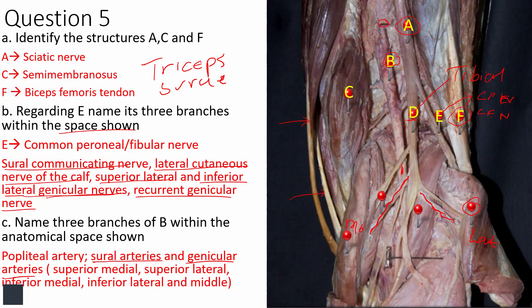The genicular arteries supply the knee joint. There are five: the superior medial genicular artery, the superior lateral genicular artery, the inferior medial genicular artery, the inferior lateral genicular artery, and the middle genicular artery. The middle genicular artery is notable because it pierces the knee joint capsule to supply intracapsular structures such as the cruciate ligaments.